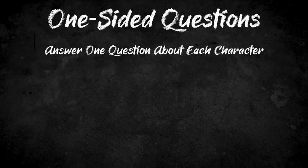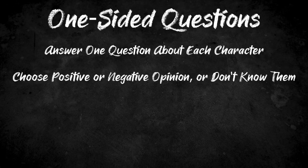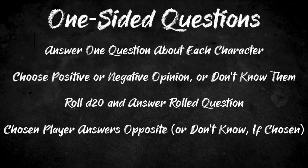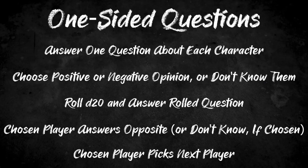For one-sided questions, each character will end up answering one question about every other character at the table. You start with one player, who decides if they have a positive, negative, or don't-know opinion of another person. If positive or negative, they answer from the appropriate list, and then the person they selected answers a question back — but the opposite sentiment. If they chose don't know, the other player also answers a don't-know question. This continues moving around the group until every player has answered one question about every other player.